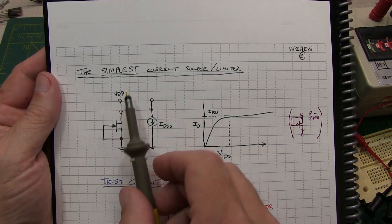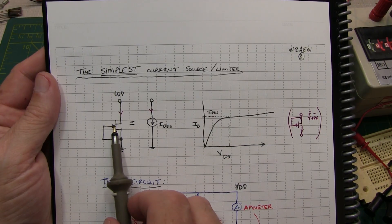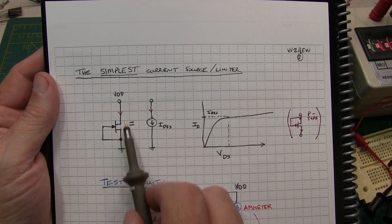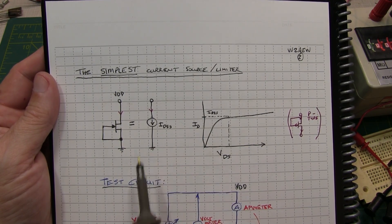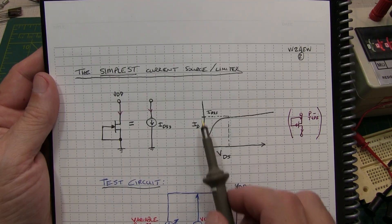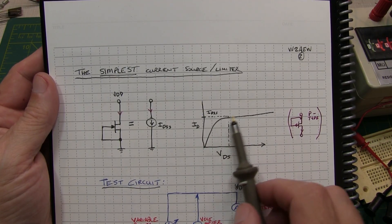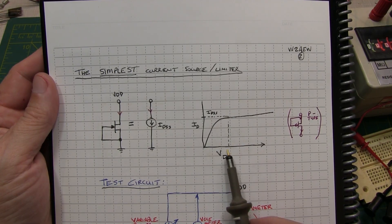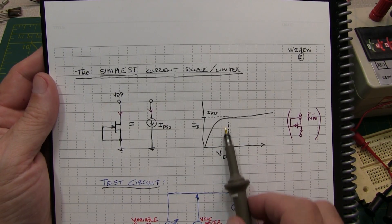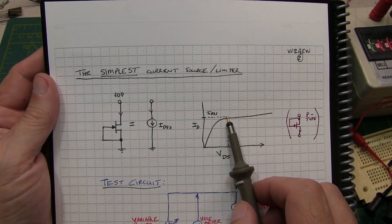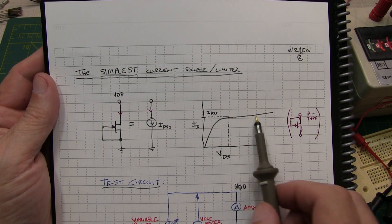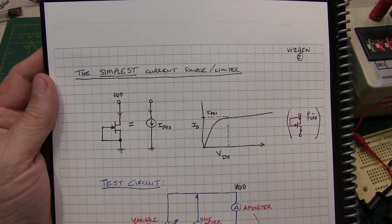So the simplest possible current source is simply short the gate to the source. That's going to guarantee VGS is zero volts and the current is going to get limited to essentially IDSS. That's kind of that first curve we saw before we started changing gate to source voltage. And again, we need the drain to source to be about one to one and a half times the pinch-off voltage or the cutoff voltage to ensure that we're reasonably constant with that IDSS.